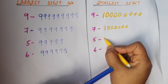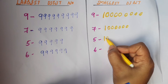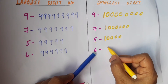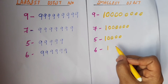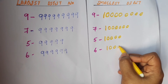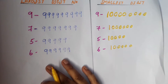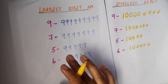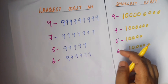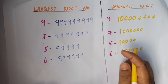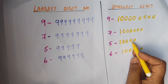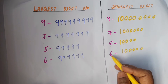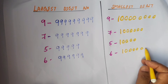Smallest five-digit number means we write one first, then four times zeros: one, two, three, four. Smallest six-digit number means we write one, then five times zeros: one, two, three, four, five. To find the greatest number, for any N digits, write nine N times. For the smallest, write one first, then one number reduced — that is, (N minus one) times zeros.